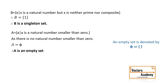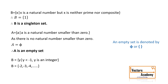Next, set B contains y such that y is smaller than -1 and y is an integer. Integers contain positive as well as negative numbers. The numbers smaller than -1 on the number line are -2, -3, and so on. So set B contains all these elements. These elements are uncountable — the numbers never end: -10, -20, -40, going on till minus infinity. Hence B is an infinite set.